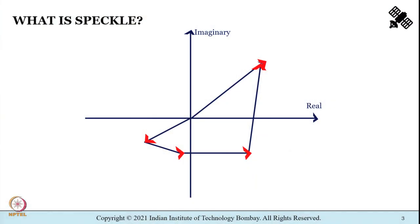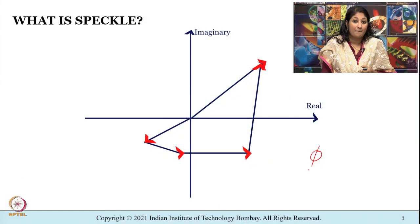A SAR resolution cell shall contain a large number of targets or scatterers whose return echoes are coherently summed to obtain the phase and brightness of the resolution cell. A synthetic aperture radar resolution cell is going to contain a large number of targets or scatterers whose return echoes are coherently summed together to obtain the phase information and the brightness of the resolution cell. If there are a large number of scatterers, the resolution cell shows a brightness value which is much larger than the actual brightness of the object, and this appears as speckle on the SAR image.